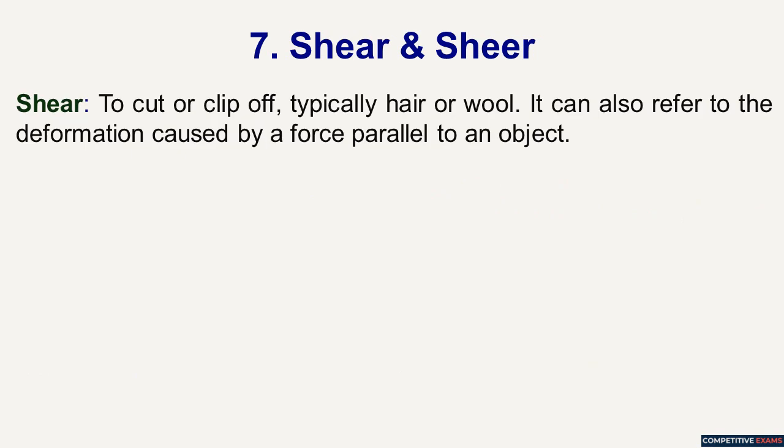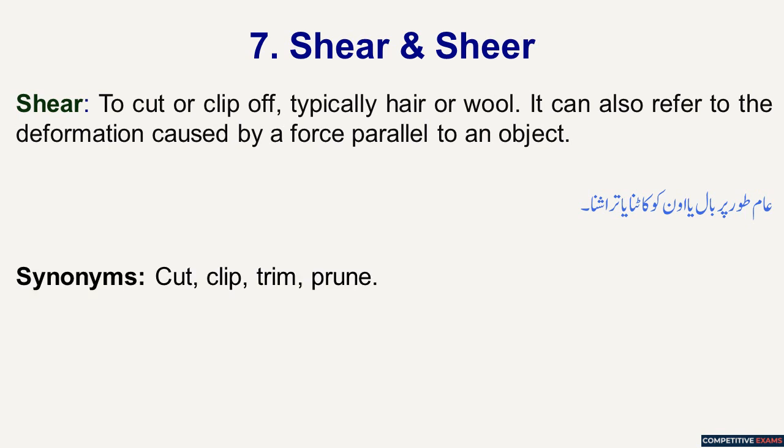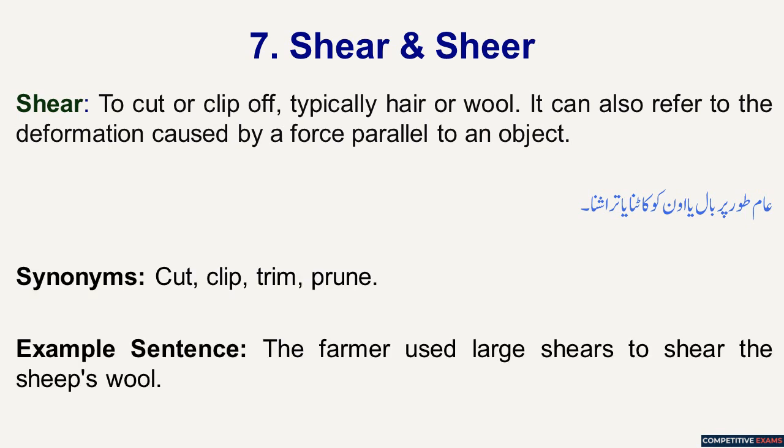Shear and Sheer. Shear means to cut or clip off, typically hair or wool. It can also refer to the deformation caused by a force parallel to an object. In Urdu, aam taur par baal ya oon ko kaatna ya teraashna, ya jab kisi cheez par zor apply kiya jata hai aur us force ki wajah se uski shakal bighed jati hai. Its synonyms are: cut, clip, trim, prune. Example sentence: The farmer used large shears to shear the sheep's wool.